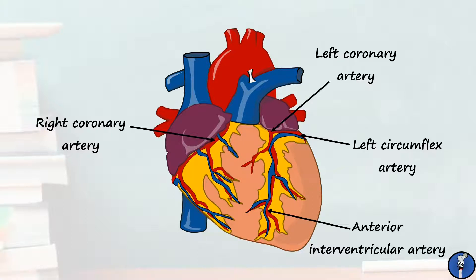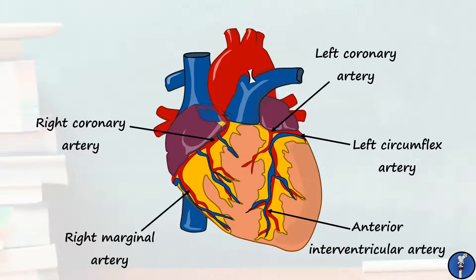The left circumflex continues around the heart to provide blood to its posterior. The right coronary artery also travels in the coronary sulcus, but going in the opposite direction. It travels down before giving off the right marginal branch, which travels towards the apex. The rest of the right coronary also continues into the posterior. The last artery to note on the anterior surface is a branch of the right coronary artery, which passes up around the superior vena cava to supply the sinoatrial node specifically.